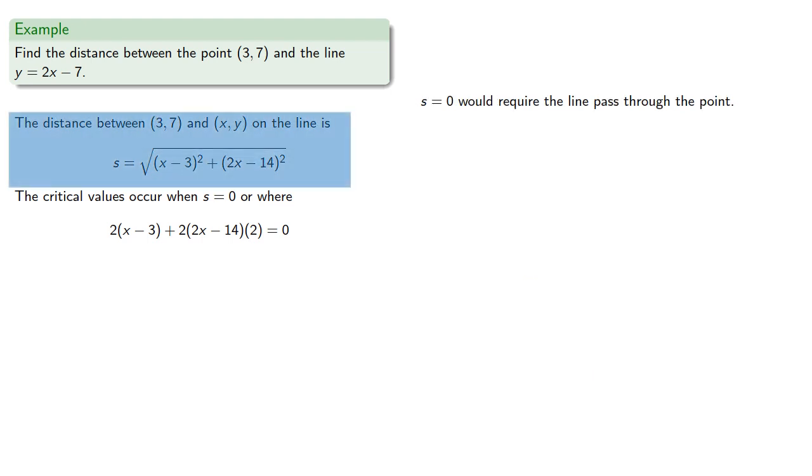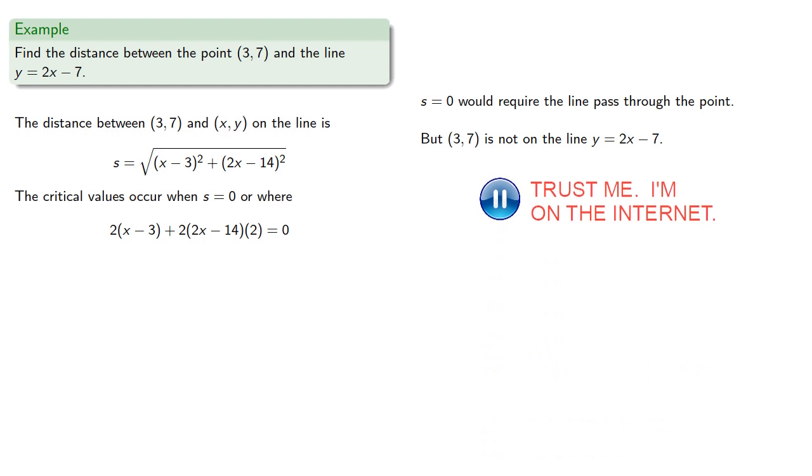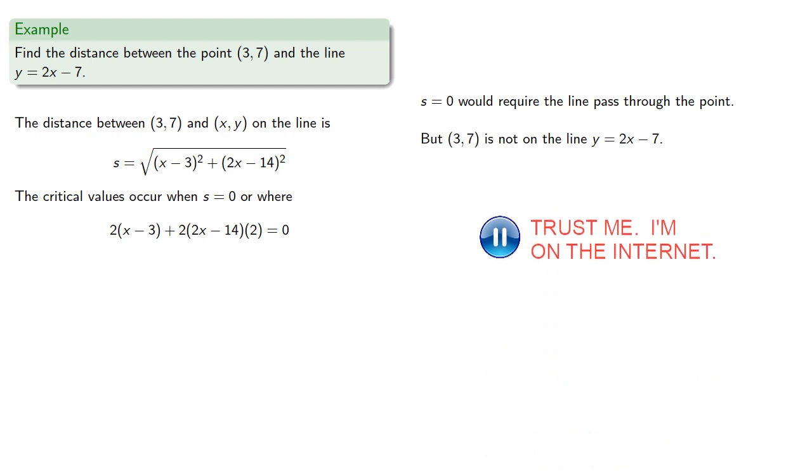So remember, s is the distance between the point and the line. So s equals 0 would require the line to pass through the point. But (3,7) is not on the line.